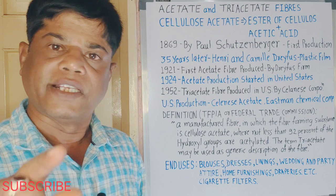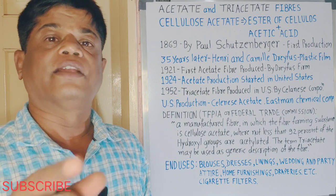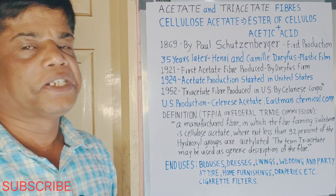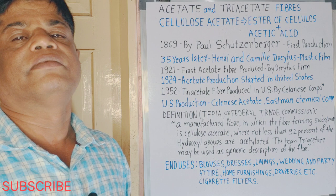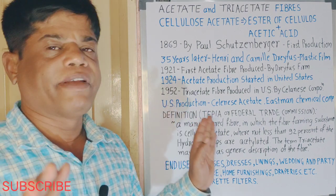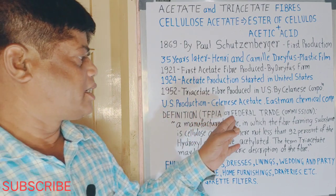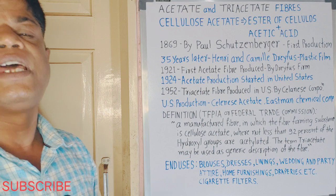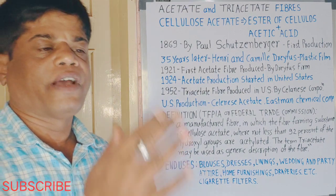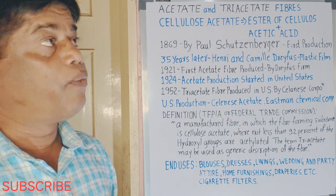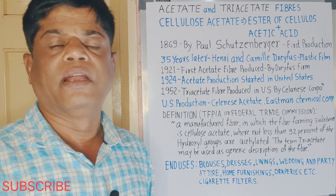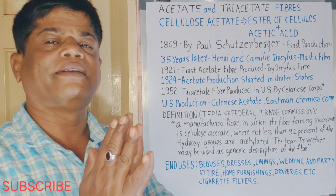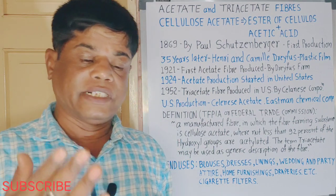The material must contain cellulose with 92 percent of hydroxyl groups acetylated. That type of material is called acetate fiber, and triacetate is a generic name given by the Textile Fiber Products Identification Act and the Federal Trade Commission. Acetylation is the process of converting cellulose pulp into acetate fiber in the textile mill.